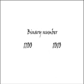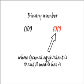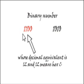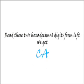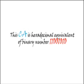Split this number in two possible four-bit groups. From the right, the first group is 1010, which means hex A. Second group is 1100, which means hex C. Now, if we read these two hexadecimal digits from left, we get CA. And this CA is hexadecimal equivalent of binary number 11001010.